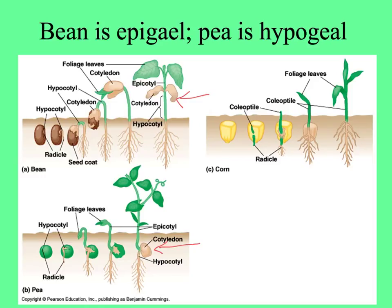And then here's a monocot — corn. Note the radicle, the primary root — that's the first thing to come out when a seed germinates. The coleoptile is the new shoot coming up, acting as the cotyledon, and then the shoot rises above that. This doesn't show how some grasses may come up and then lift up.